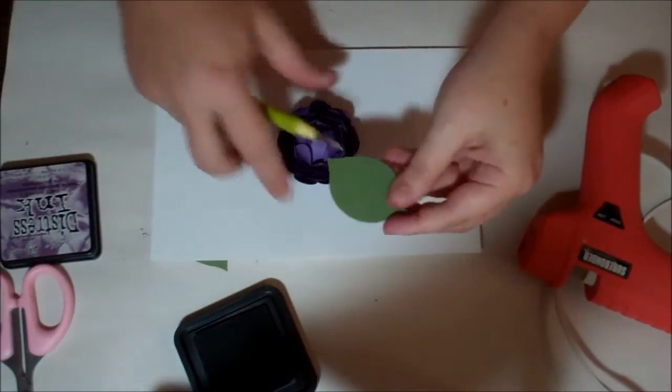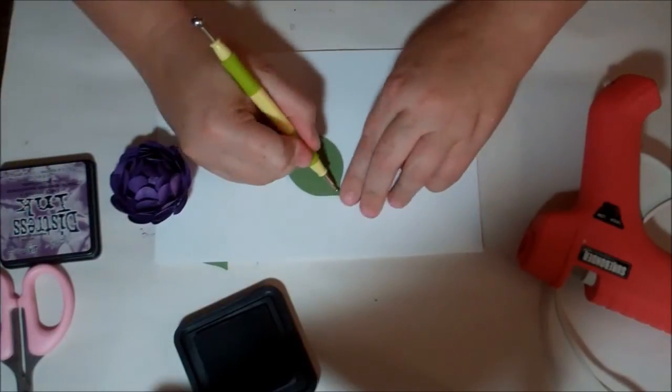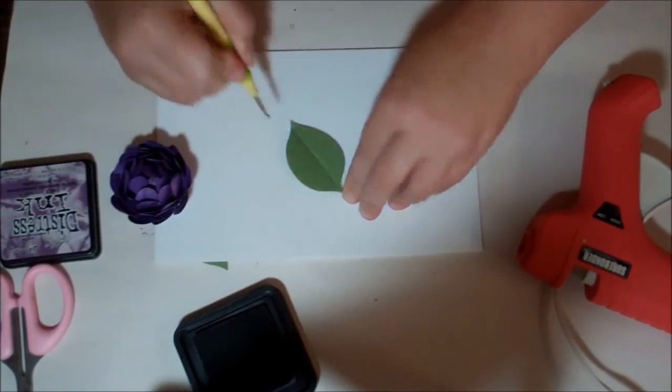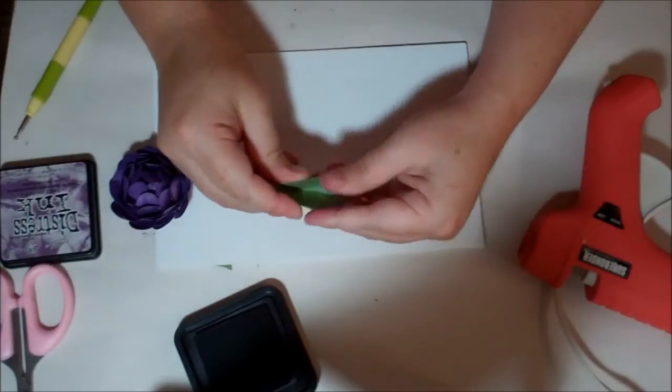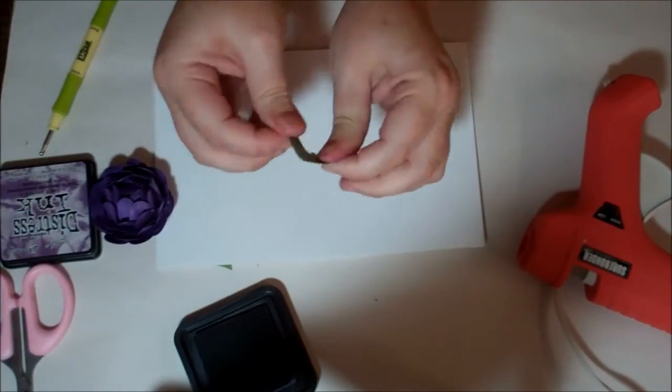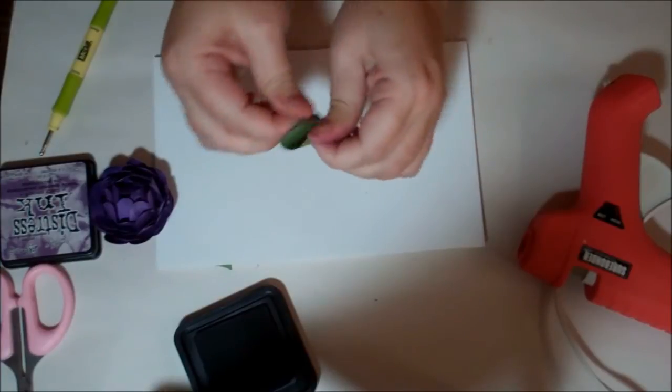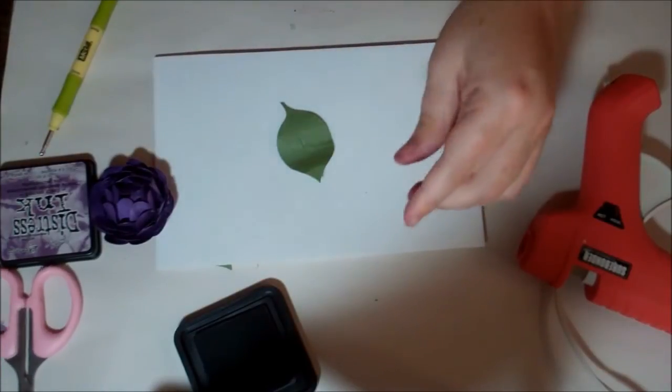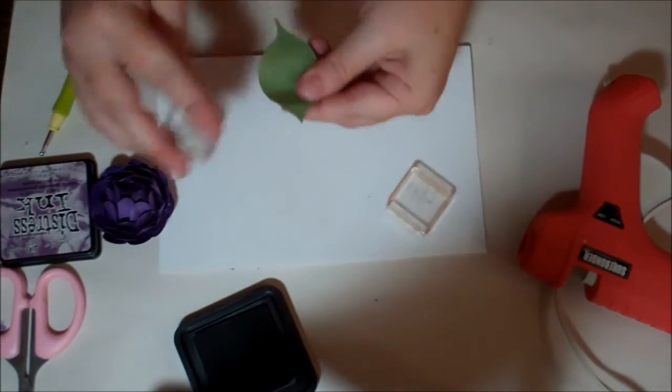Now for your leaves, what you're going to do is just take your stylus and go down the center. And then if you remember from my other videos, I just like to crinkle this, give it some movement, and then hit it with some bark ink.